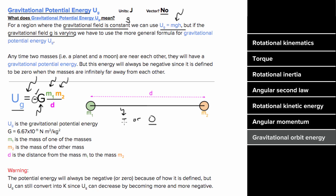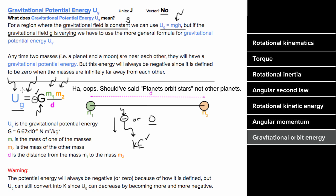Even though gravitational potential energy is negative, it can still be converted into kinetic energy — the gravitational PE must become more negative to release that energy as kinetic energy. This formula is especially relevant when planets are orbiting in circular orbits. The units are joules.